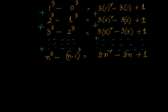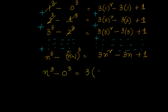If I add 1 cube minus 0 cube plus 2 cube minus 1 cube, then 1 cube and 1 cube cancel out. Similarly 2 cube and 2 cube cancel out, and 3 cube also cancels out. This telescoping cancellation continues, and what I am left with is nothing but n cube minus 0 cube. So the left side simplifies to n cube. Now you know why we are doing this exercise — because we want to find out the sum of squares of natural numbers.